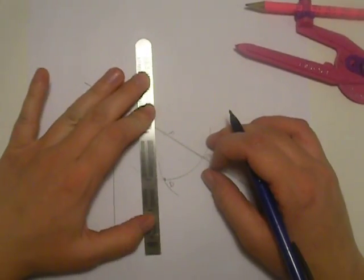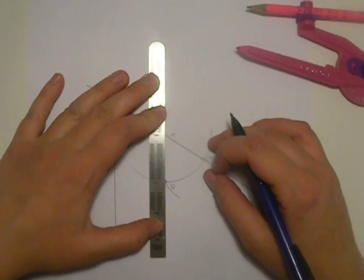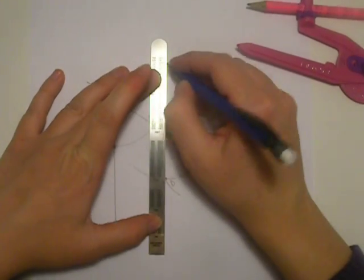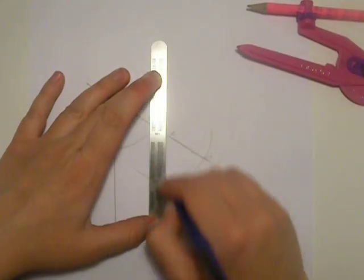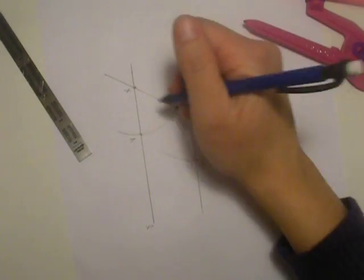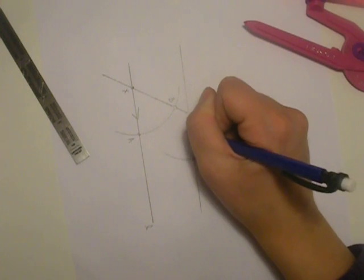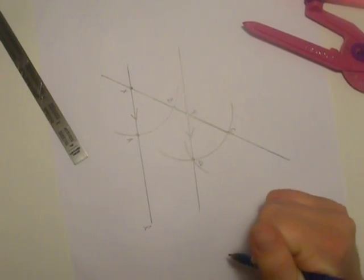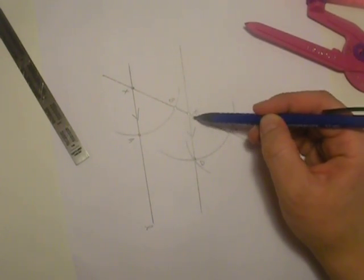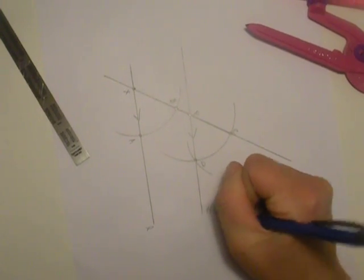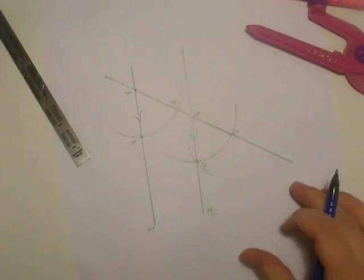We're going to connect P to D. Now we have two parallel lines. Line L through point X and A, and this line we can call M through P and D.